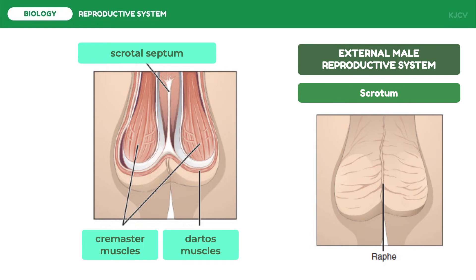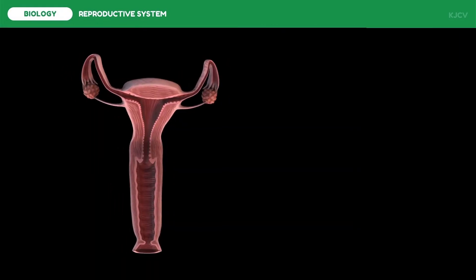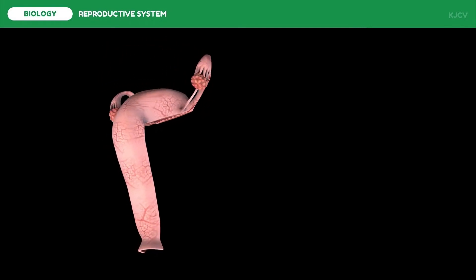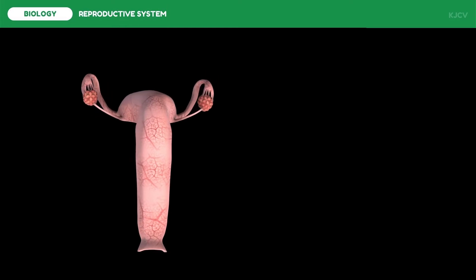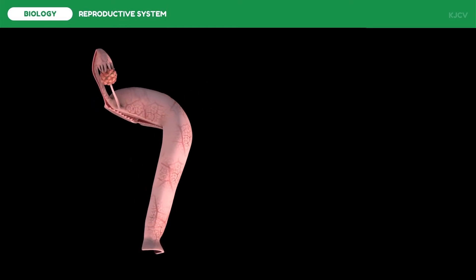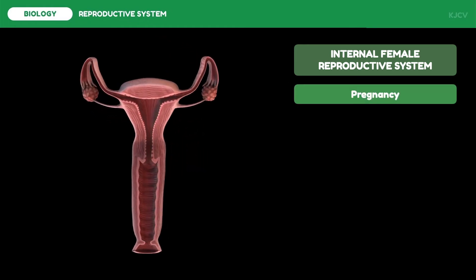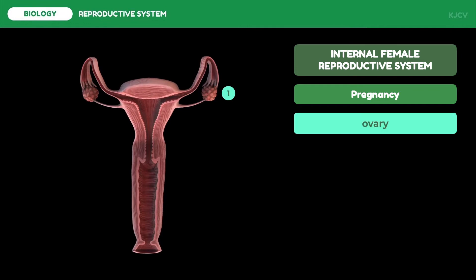After discussing the male reproductive system, let us now discuss the female reproductive system. The female reproductive system has numerous functions, but we will focus our discussion on the internal female reproductive system's function in pregnancy, since this is the main reproductive function of females. The main reproductive organ in females is the ovary.